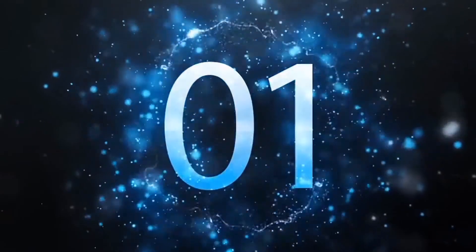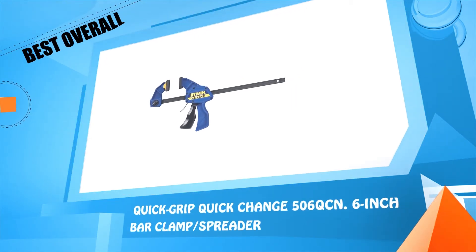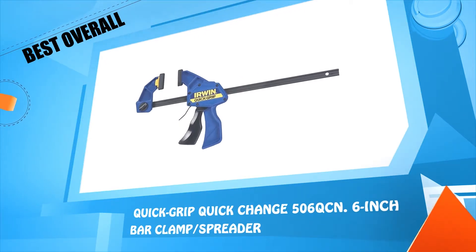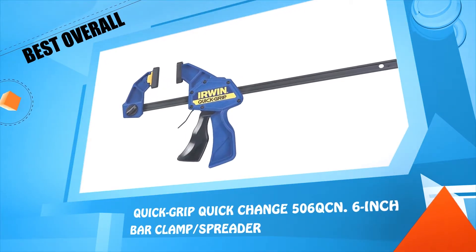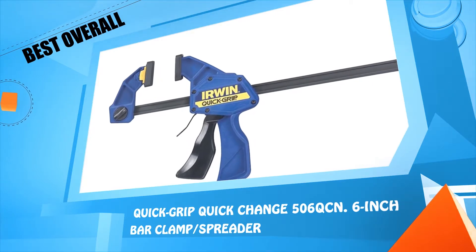Number 1. Quick Grip Quick Change 506 QCM, 6 inch bar clamp or spreader.